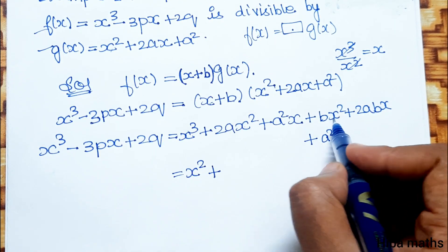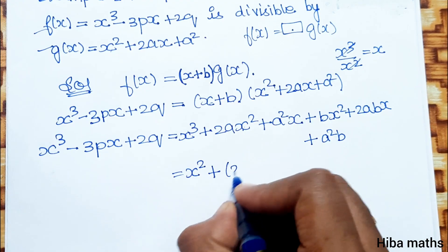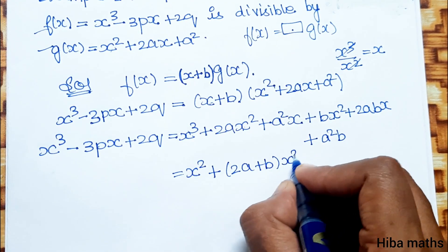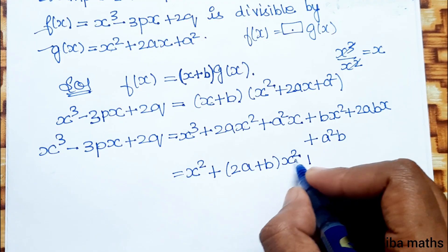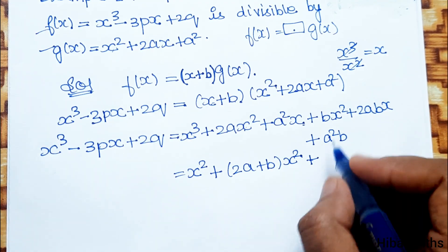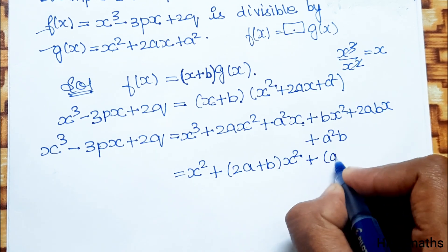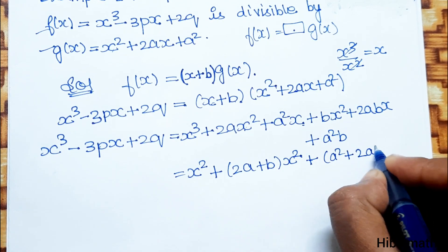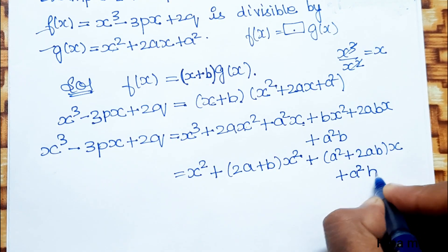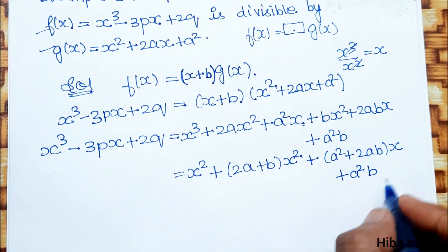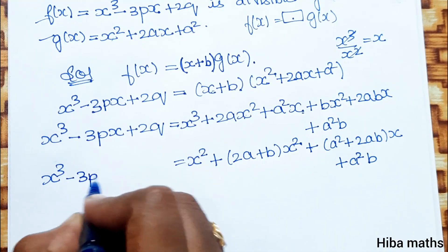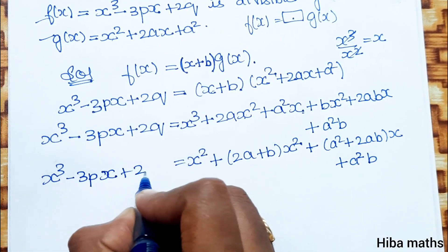Collecting terms: for x square we have 2a plus b. Coefficient of x is a square plus 2ab. The last constant is a square into b. Now we have x cube minus 3p into x plus 2q on the left side.